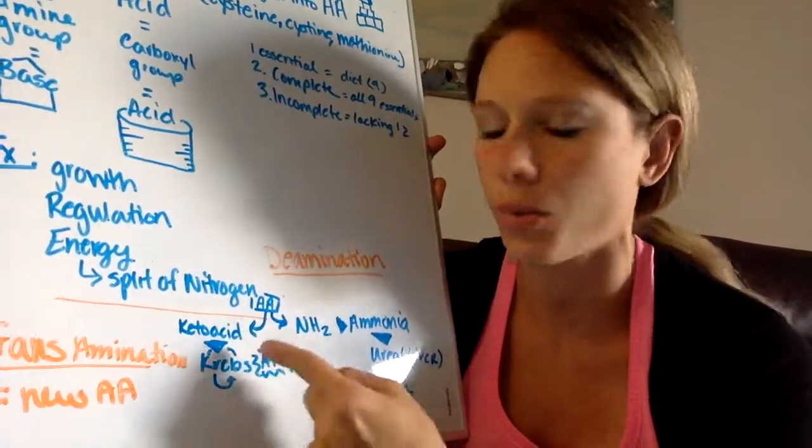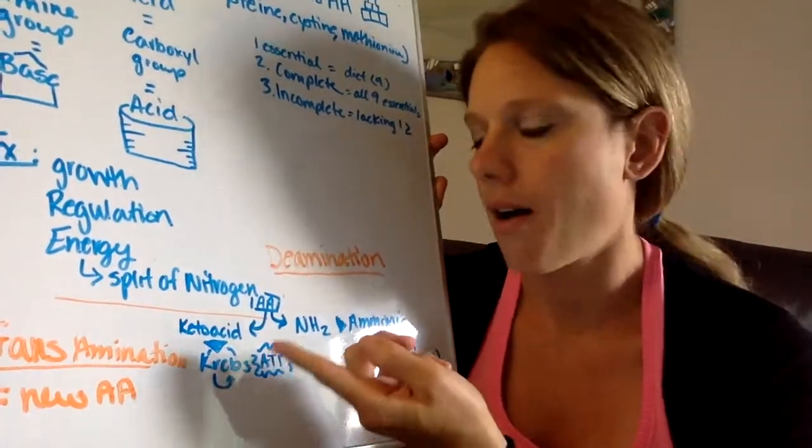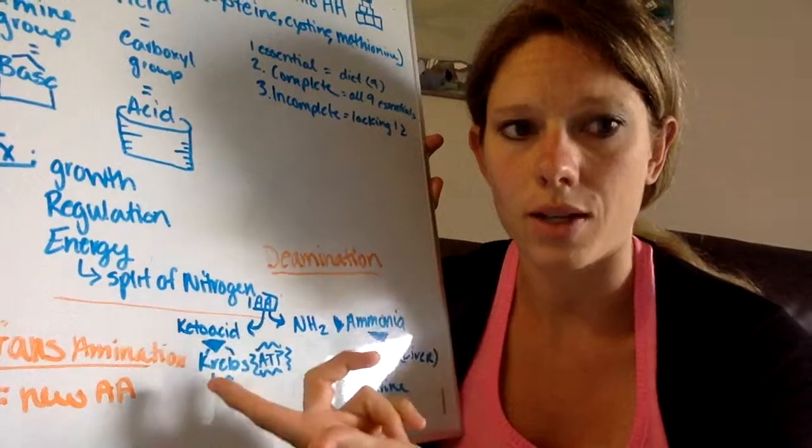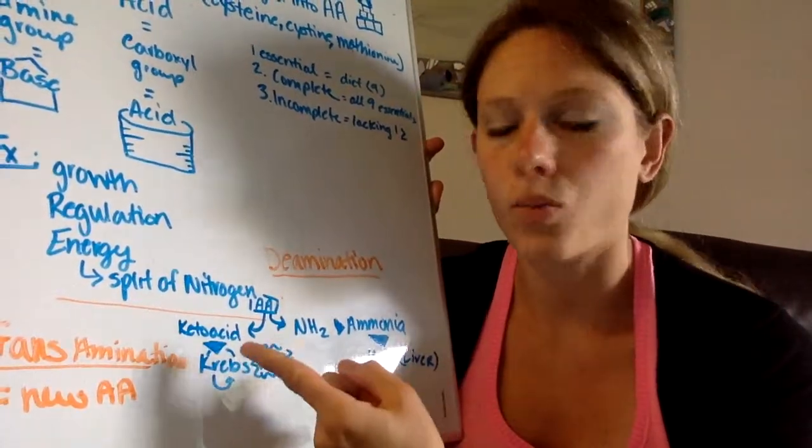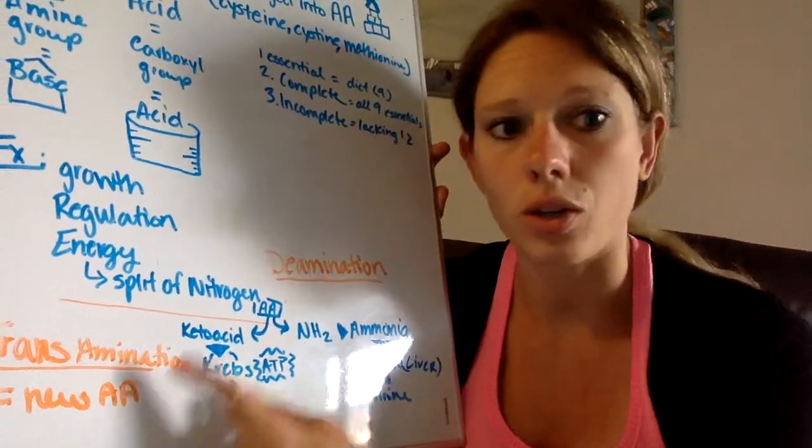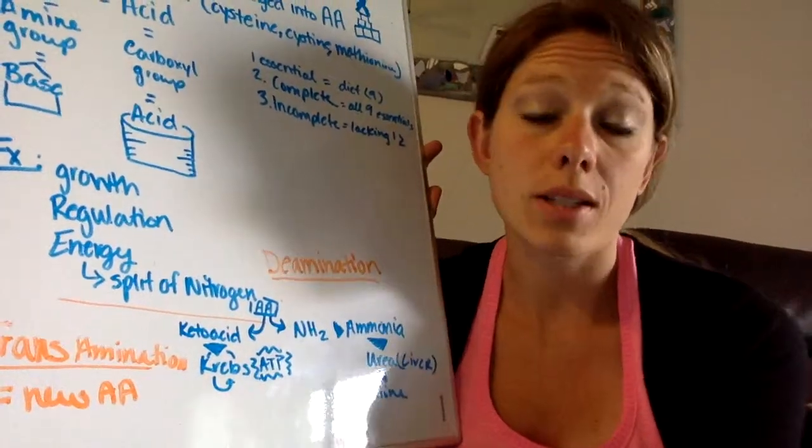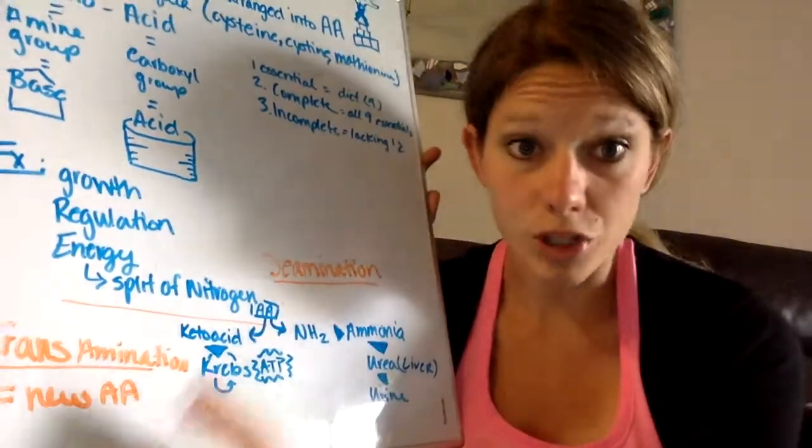The energy process is going to be what's left over which is going to be a keto acid and depending on what amino acid you're deaminating you're gonna have different keto acids that will then be able to enter into the Krebs cycle and as we know Krebs is how we are going to be getting energy.